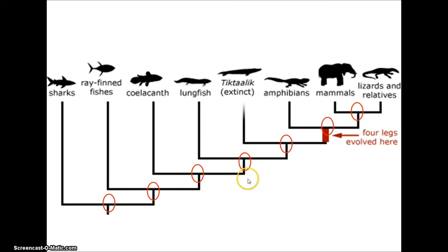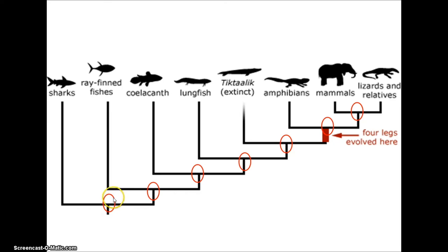If we look down at the root of the tree, we can see where all the branches come together. This is the common ancestor of fish and tetrapods.